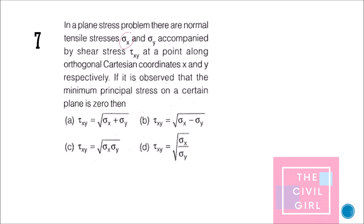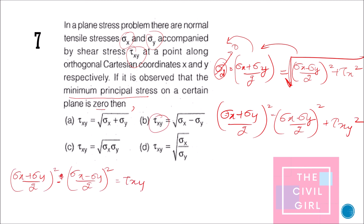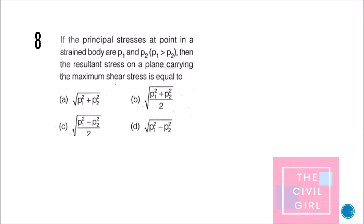Question 7: Normal tensile stresses sigma x and sigma y are accompanied by shear stress tau xy along orthogonal Cartesian coordinates. If the minimum principal stress is observed to be zero, what follows? The formula for minimum principal stress sigma 2 is set equal to zero. Rearranging gives (sigma x + sigma y) / 2 equals the square root term, and solving yields tau xy = root of (sigma x × sigma y) — option C.